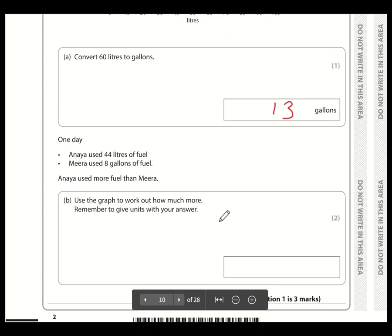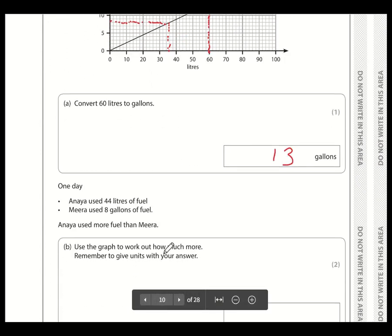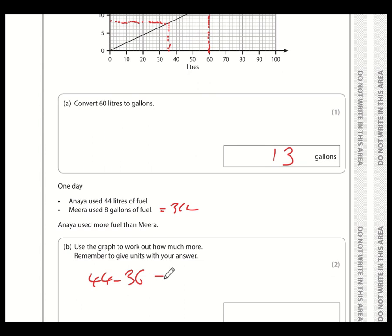Next part. One day Anaya used 44 litres of fuel. Mira used 8 gallons of fuel. Anaya used more fuel than Mira. And we need to use the graph to work out how much more. Okay. Well, either we convert 44 litres into gallons or we convert 8 gallons into litres. I'm going to try for 8 gallons into litres. So we're going up in ones here. So 8 is 2 below 10. And it hits the line at this point here, which is 2 squares below 40. And here we're going up in 2's. So that is, if this is 40, then 4 below 40 is 36. So Mira uses 36 litres. So how much more does Anaya use? Well, 44 take away 36, which is 8 litres.